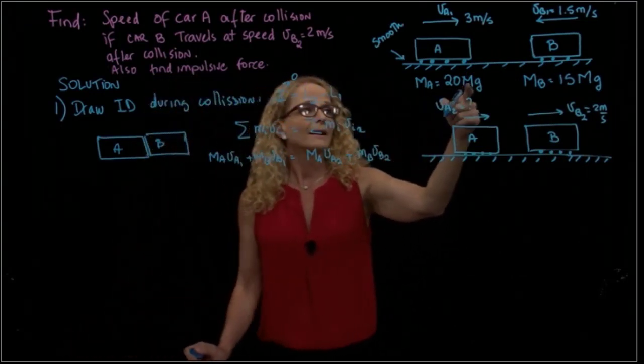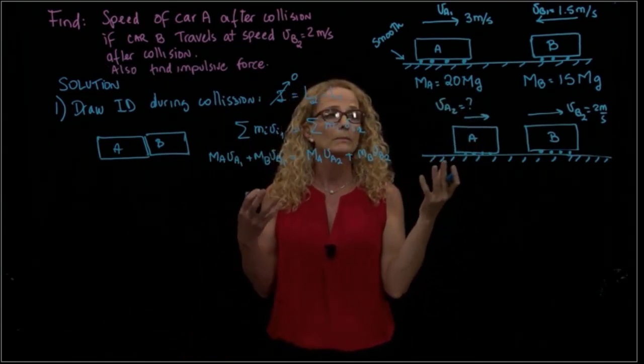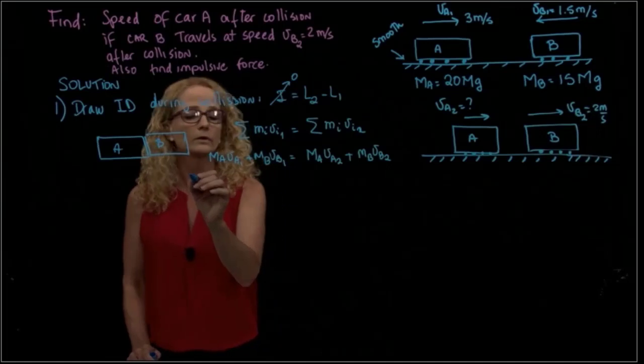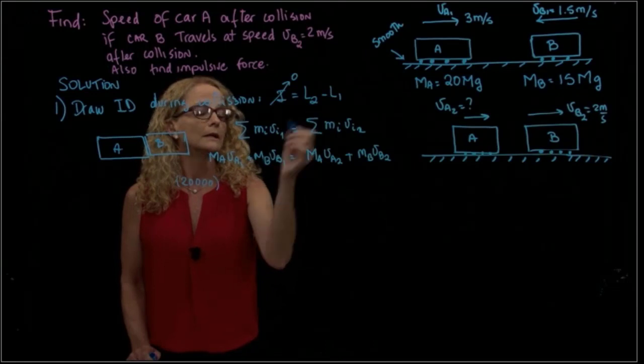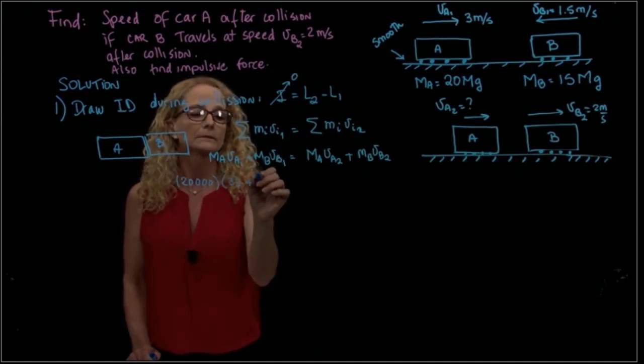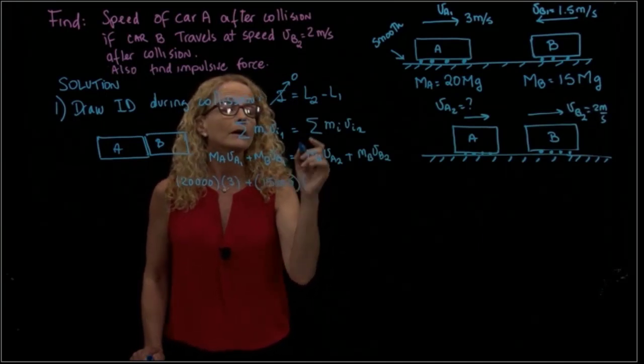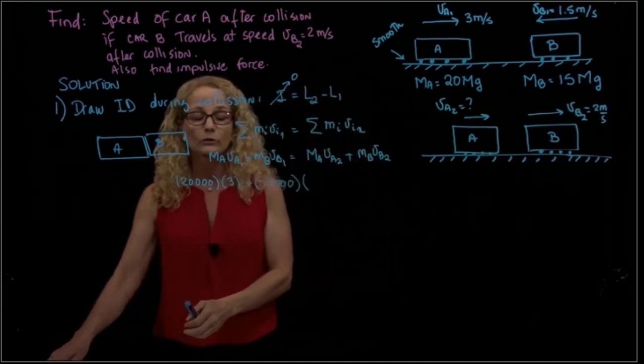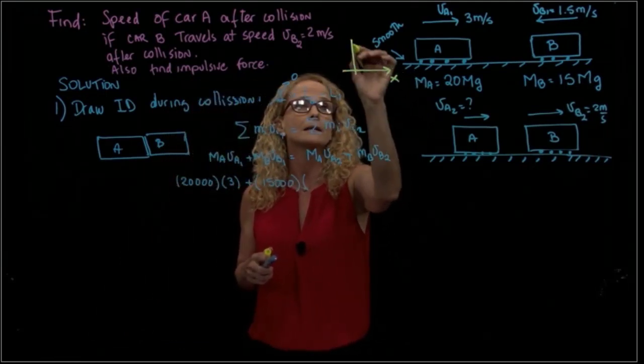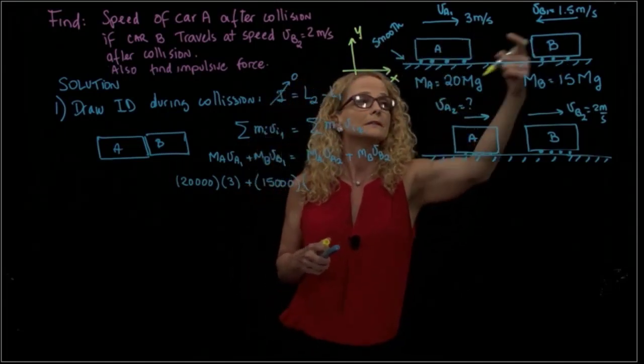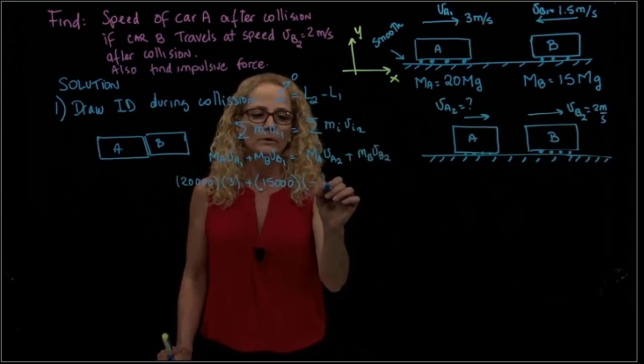So I have 20 megagrams - I have to put it in kilograms to be consistent with units. This is 20,000 times velocity A, which is 3, plus 15,000. I have to be very careful with the proper sign of the velocity. I'll draw my coordinates in x and y - this velocity is positive and this velocity is negative, negative 1.5.